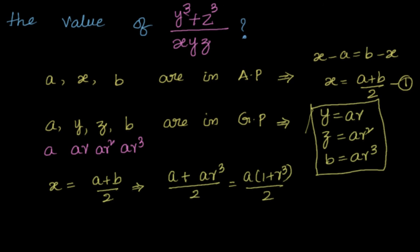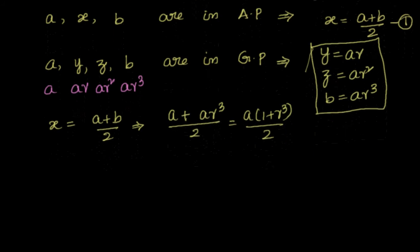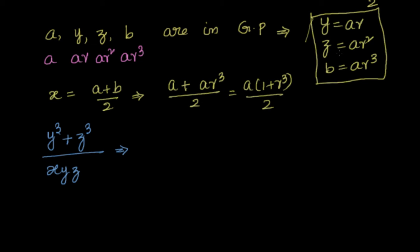We need to find y³ plus z³ divided by xyz. Let's go and finish it. We will simplify this expression since we know all the values in terms of a and r.